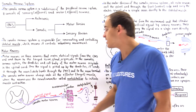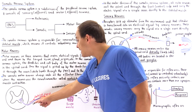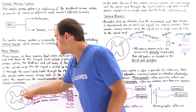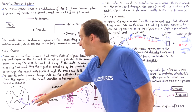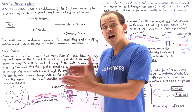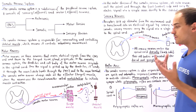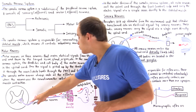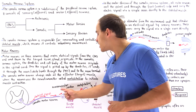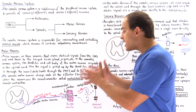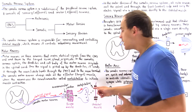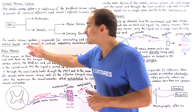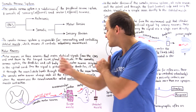Once the signal is picked up by the dendrites, it is sent through the axon of the somatic motor neuron. Notice that the cell body is within the central nervous system, but the axon of the motor neuron is located entirely in the peripheral nervous system. The electrical signal, the action potential, travels and eventually ends up at the axon terminal, which is right next to the cell membrane of the muscle cell — in this case, the skeletal muscle found inside the bicep.